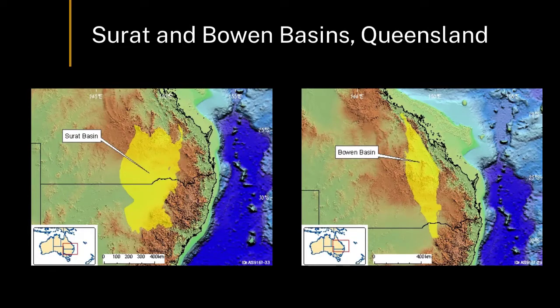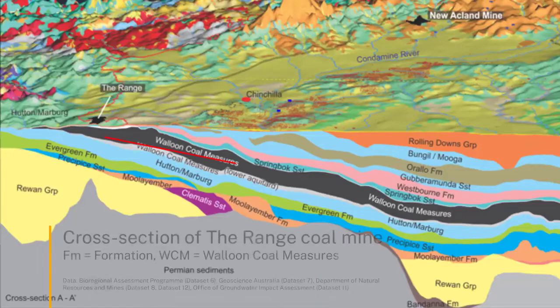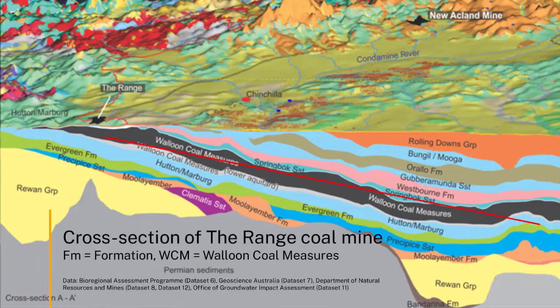How do we extract coal seam gas? We drill an extraction well through all the geology in these basins until we hit the coal seam proper. There they will either do horizontal drilling so that they can have various screens to be able to intercept the methane gas and extract it out.